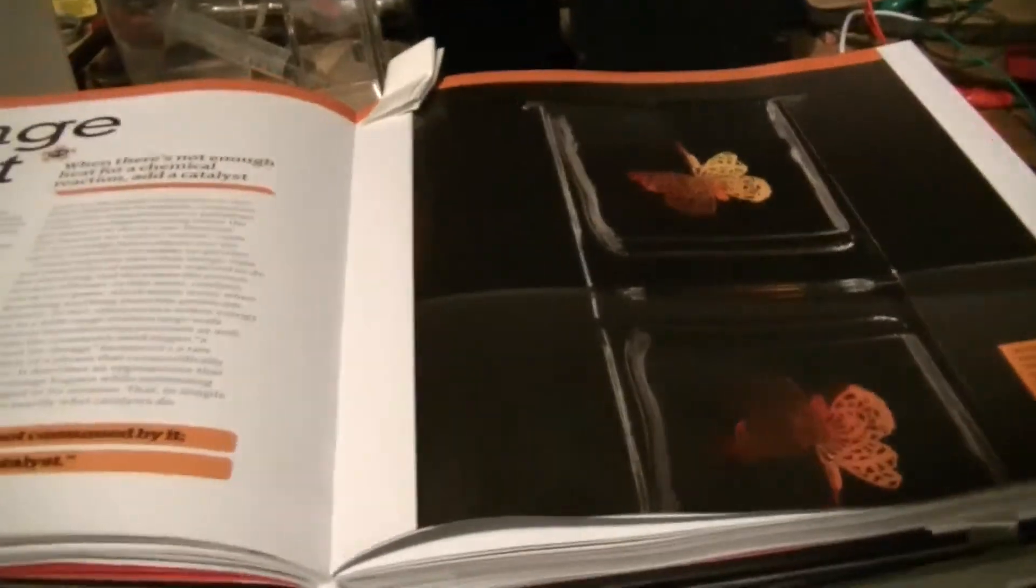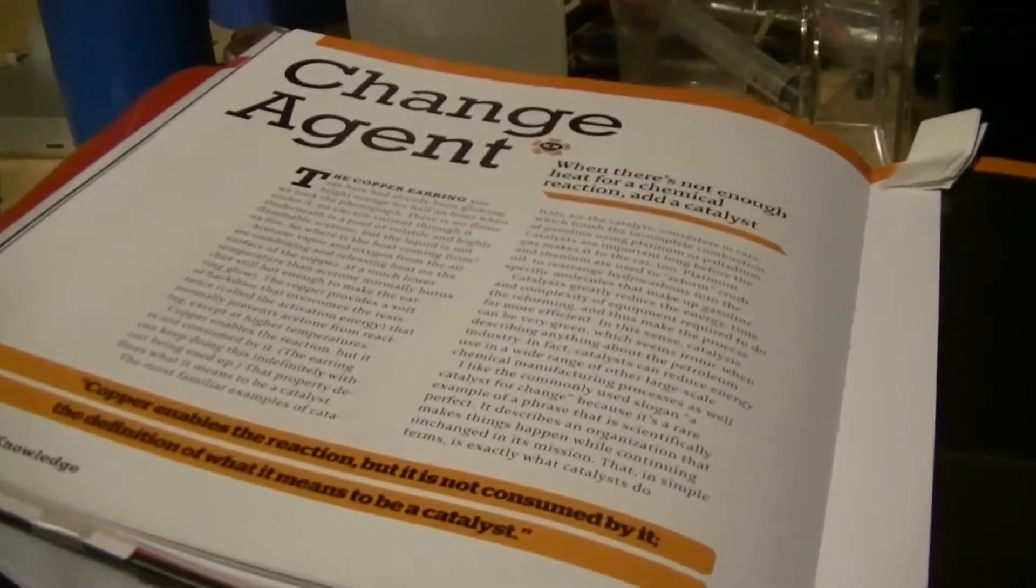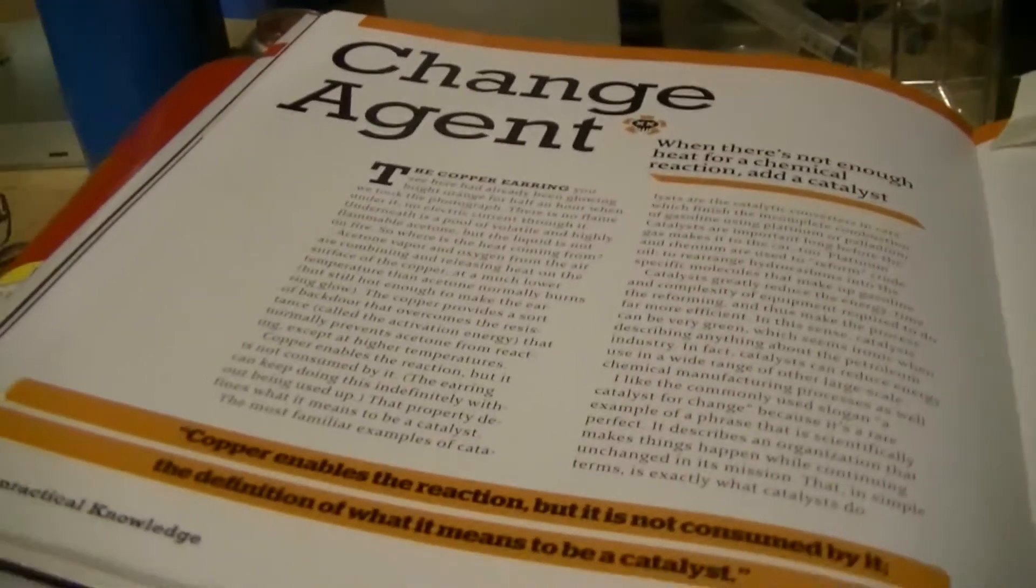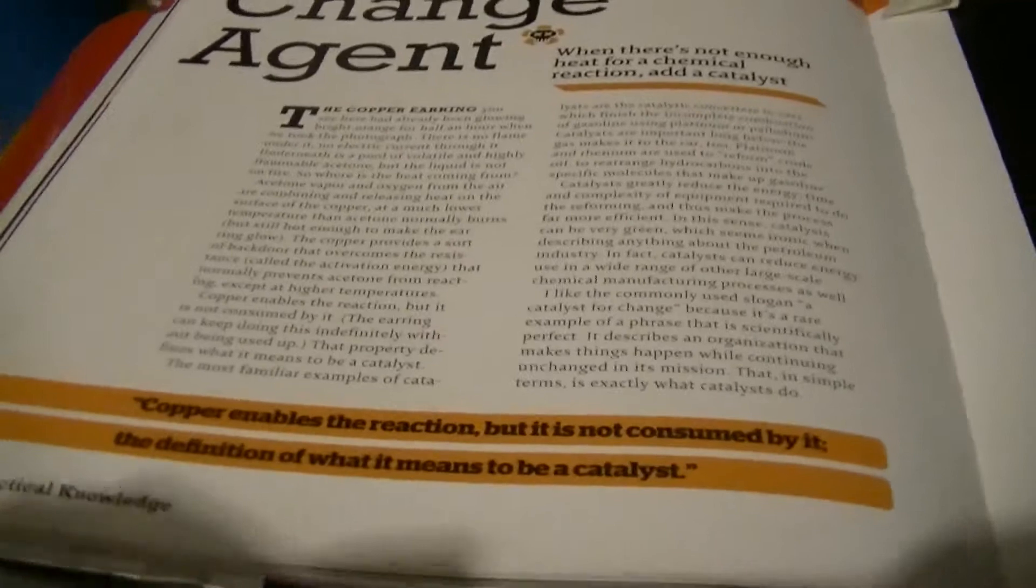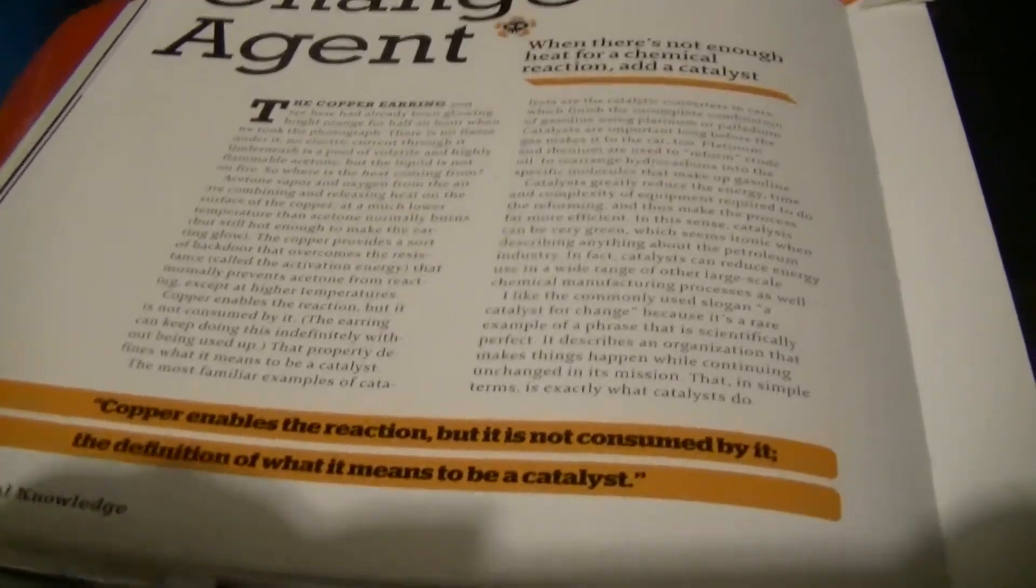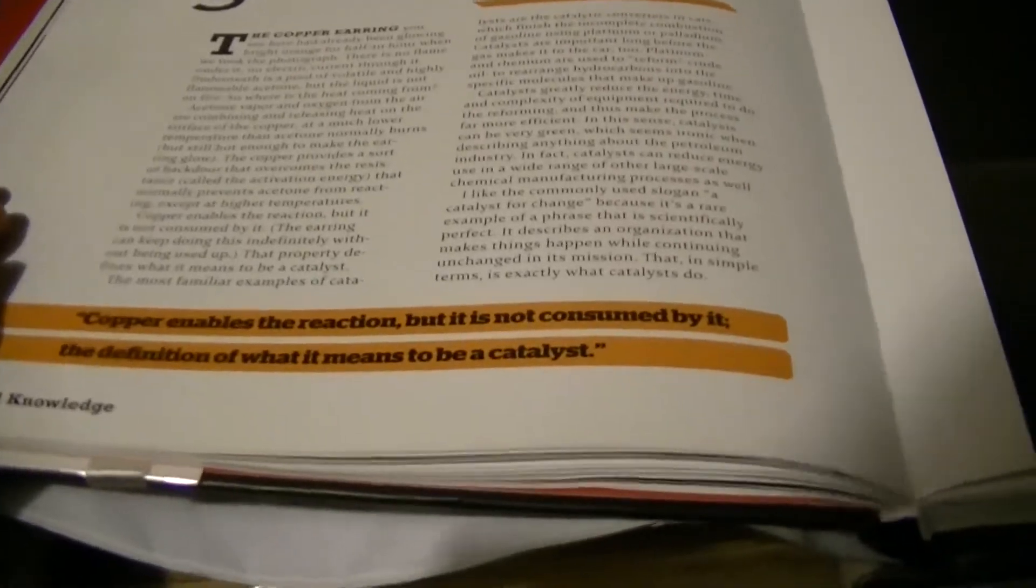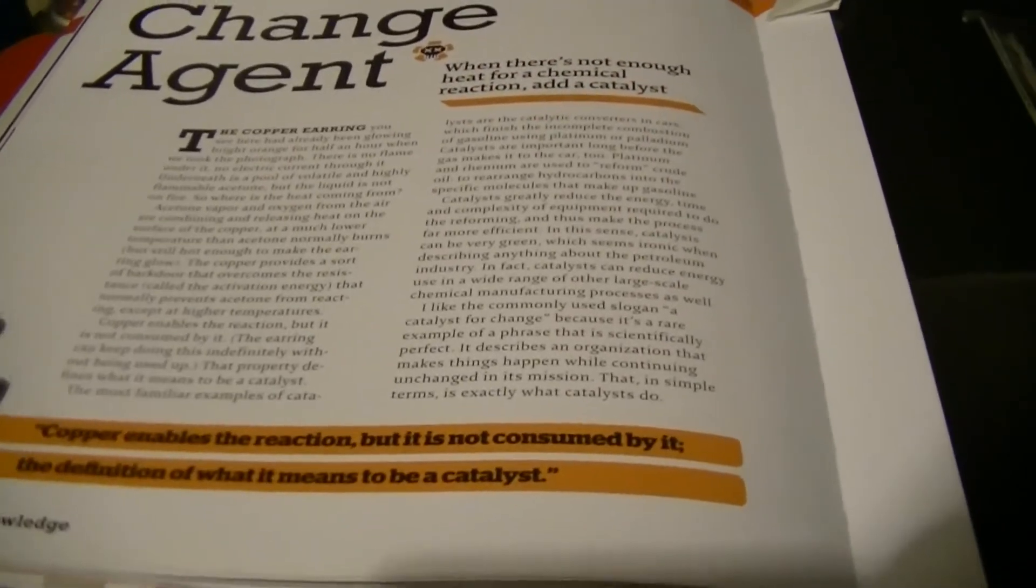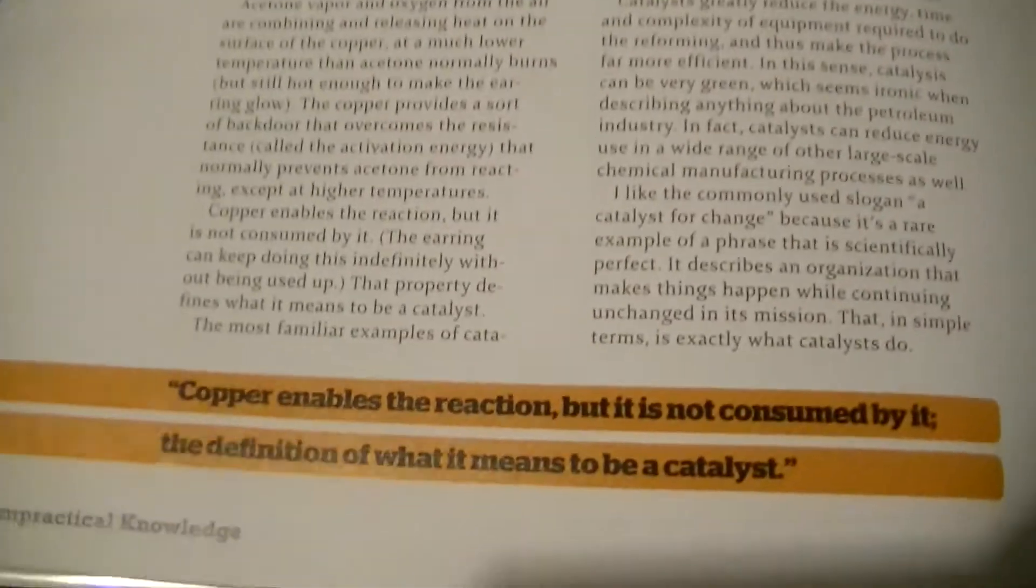I got this experiment from this book, Mad Science 2 by Theodore Gray. He's got a couple of really cool science books like this. Another book he has is Periodic Table of Elements, and he also has a really cool website. He's got a really huge collection of elements and he's got them on his website, so I'll link that in the description.